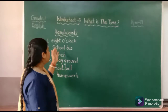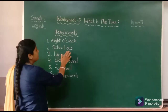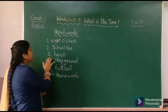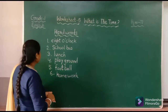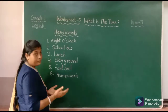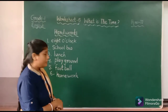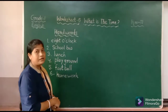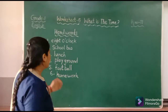So kids, these are the hard words of this chapter. Number 1: 8 o'clock — the time. Number 2: school bus — when we go to school, we take the school bus. Number 3: lunch — we have to take lunch in the afternoon. Number 4: playground — where we play games. Number 5: football — a game where we beat the ball. Number 6: homework — when teachers give homework, we have to do it.